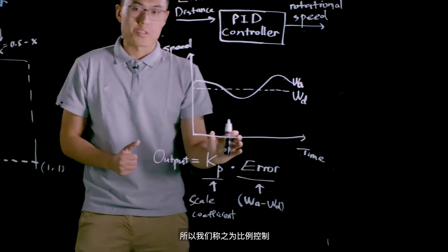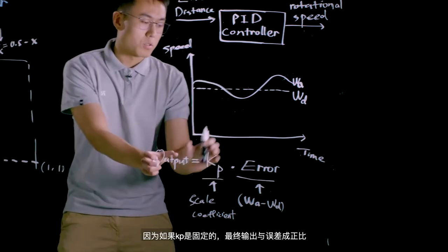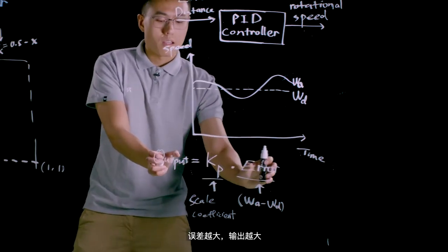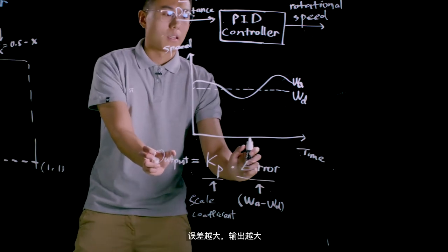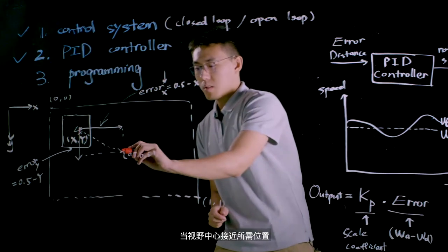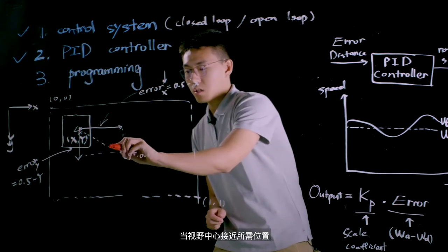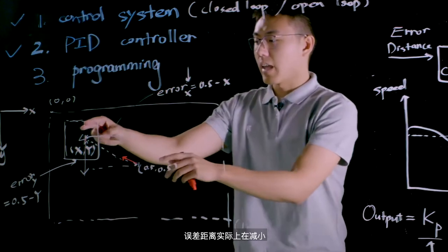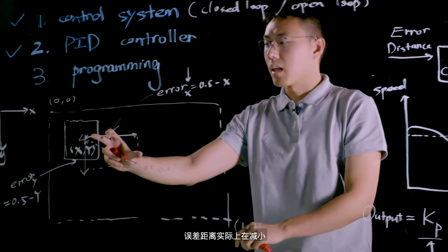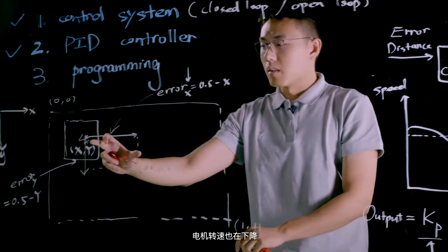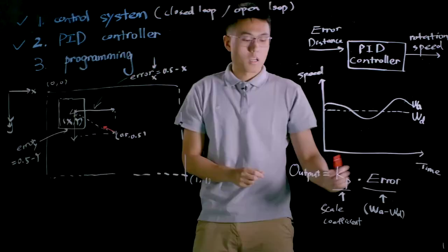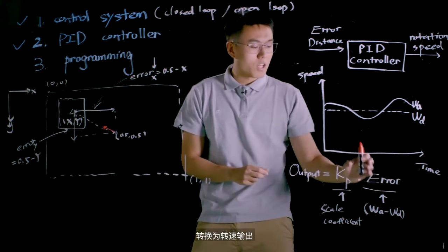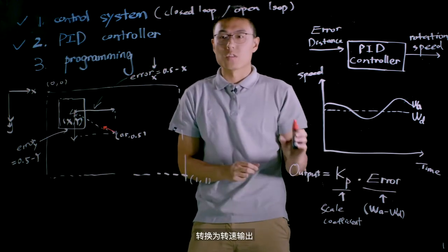So we call it proportional control because the final output is proportional to the error if the kp is fixed. And the greater the error is, the greater the output will be. In this project, when the center of viewport is approaching to the desired position, which is the center of the visual marker, the error distance is actually decreasing. And at the same time, the rotational speed of motor is dropping as well. During this process, the function of P control is to amplify the error and convert it into the output of rotational speed.